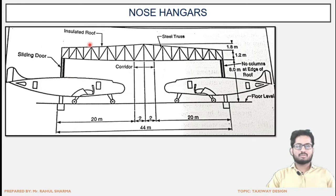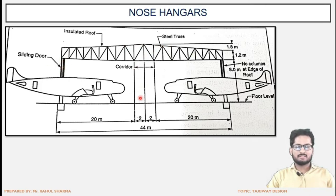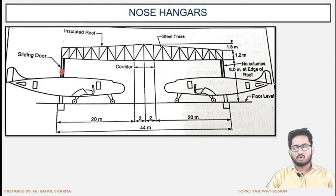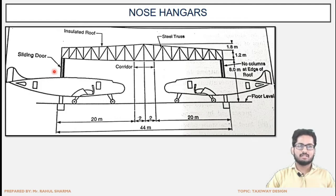Next is the nose hangar. In the nose hangar, there is a truss structure with an insulated roof to protect from weather conditions. Steel trusses are shown, and sliding doors are provided. A corridor is provided for movement. No columns are kept at the edge of the room, because if a column is placed there, it would consume space and restrict aircraft movement during parking or un-parking. So columns are kept to a minimum.